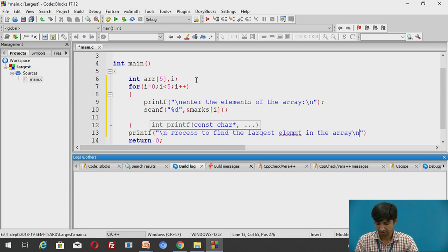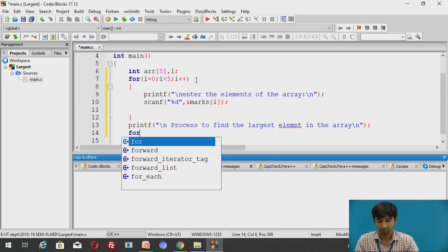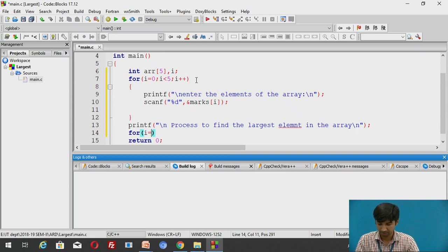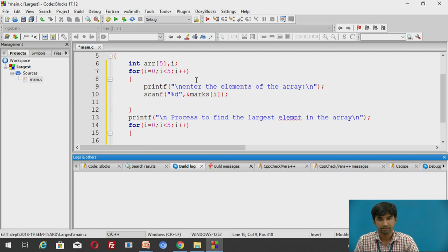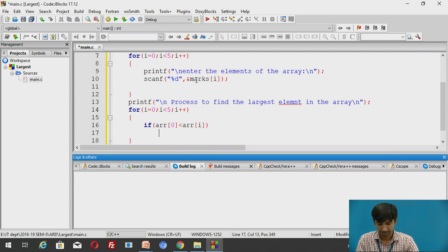i less than 5. So afterwards printf slash n process to find the largest element in the array. Slash n ending with a semicolon again. As I want to check for all the elements, for i equal to zero, i is less than 5, i plus plus.